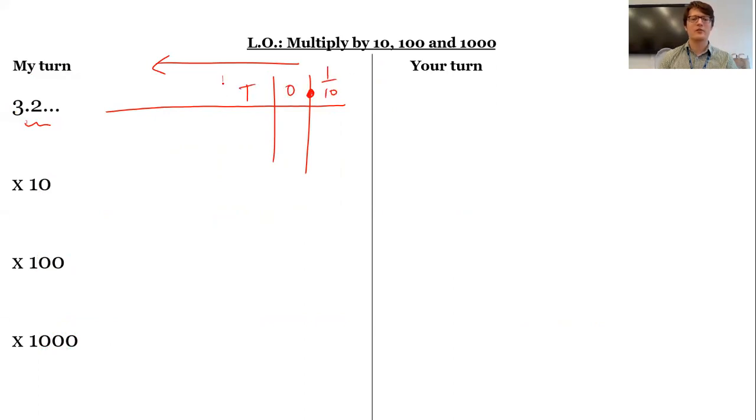Here's my tenths column, ones, and then let's have some tens, hundreds, thousands, and ten thousands. Let's put in 3.2. Times it by 10, moving one place column along. So I get three tens, two ones, which is 32.